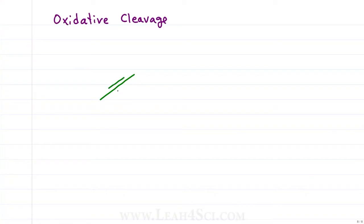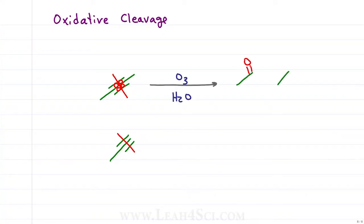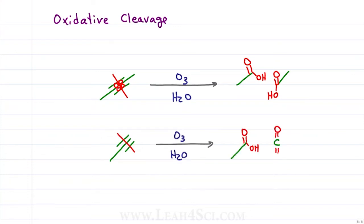Oxidative cleavage is a lot more exciting for alkynes. Starting with ozonolysis, we use the same trick — slice down the pi bonds and put in oxygen everywhere you split a pi bond. That means we add four oxygen atoms to give us two carboxylic acids for an internal alkyne, and a carboxylic acid plus carbon dioxide if we have a terminal alkyne.